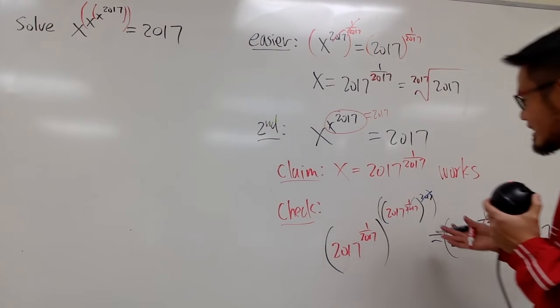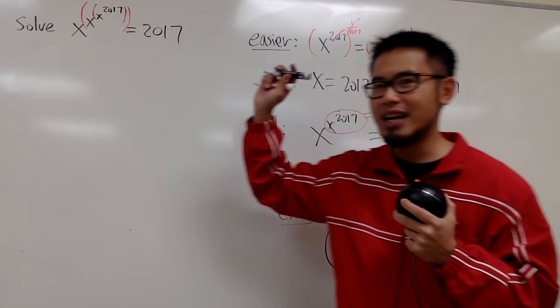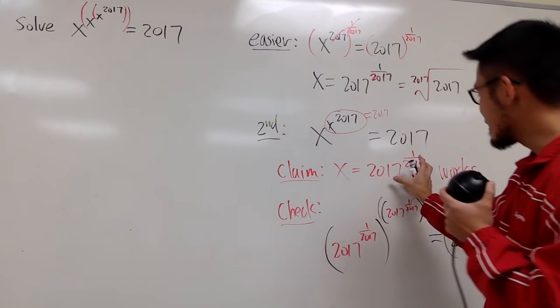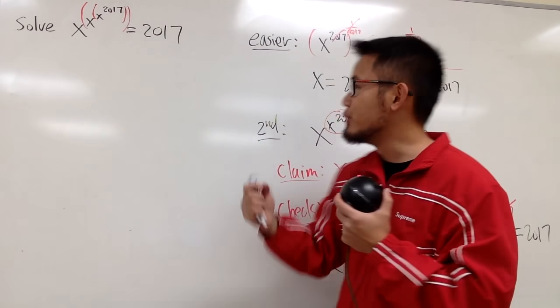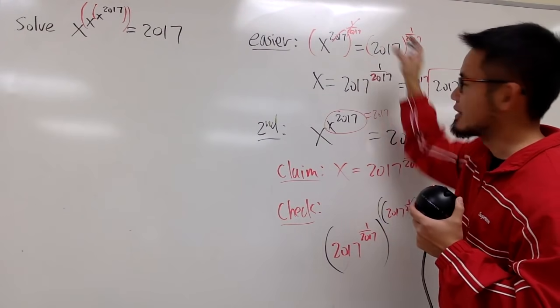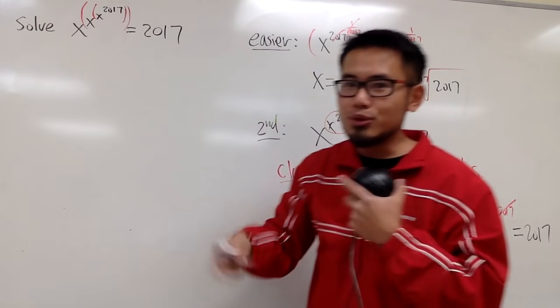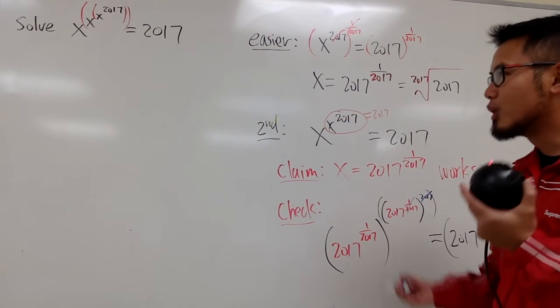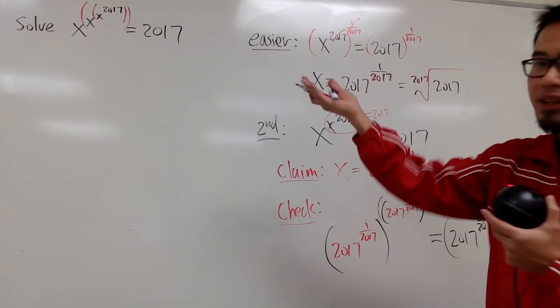You guys can see the idea now, right? Because, in fact, this is going to work for that as well, because when you plug in this number into x to the 2017, that will produce you 2017. And the moment that, if this is 2017, it just pretty much repeats. So, the deal is, this right here is the answer for that as well.